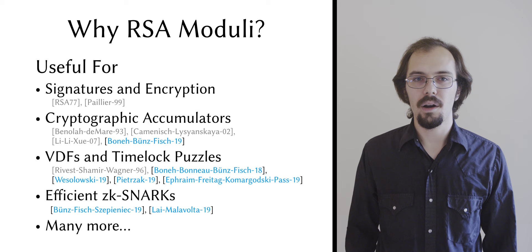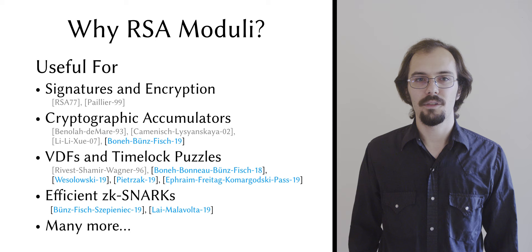However, there's no way that we know of to sample a bi-prime for which nobody knows the factors using only public randomness, so the remaining option is to distribute sampling among many parties using multi-party computation.